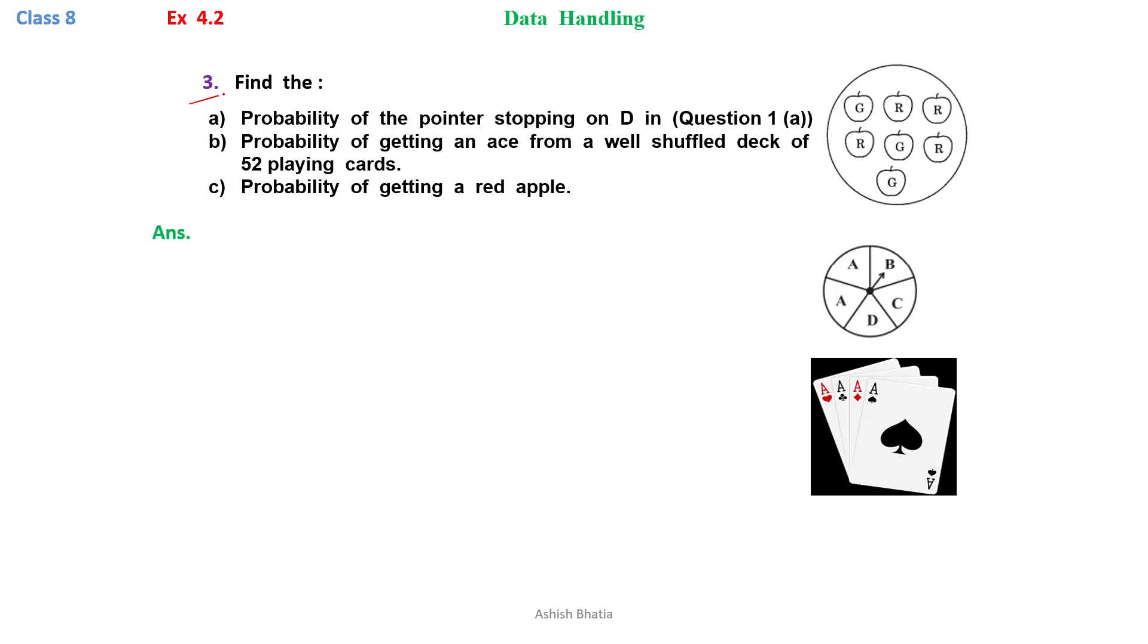In exercise 4.2, portion number 3, part B: find the probability of getting an ace.